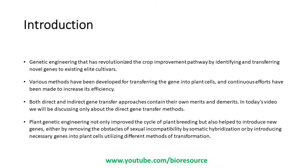The classical plant breeding technique is a slow process and it takes 10-15 years to release the new variety, and this method is restricted to the plants that can hybridize sexually. The recombinant DNA technology is a very powerful tool that molecular biologists can use to study distinct biological characteristics. Plant genetic engineering not only improved the cycle of plant breeding but also helped to introduce new genes, either by removing the active obstacles of sexual incompatibility by somatic hybridization or by introducing necessary genes into the plant cells utilizing different methods of transformation.